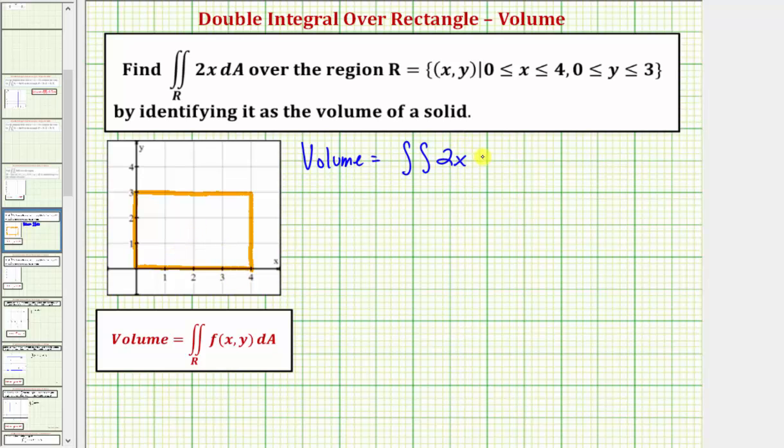If we integrate with respect to x first, we integrate with respect to x from zero to four, then we integrate with respect to y from zero to three. This would give us the volume of the solid, but if we change the order of integration, we would also get the volume.